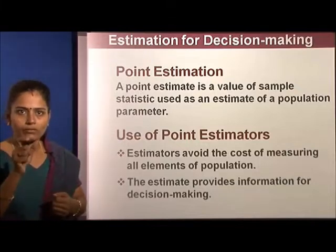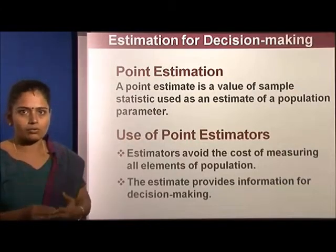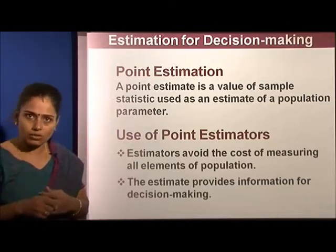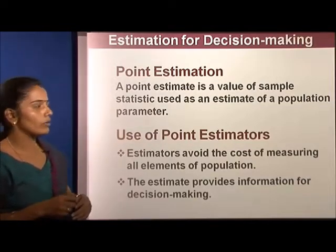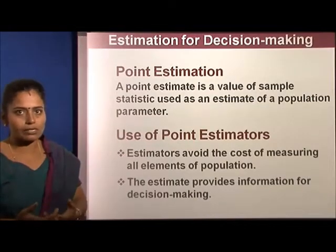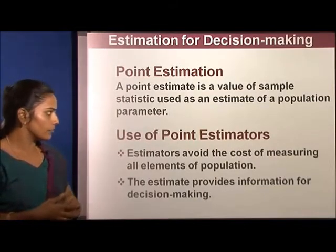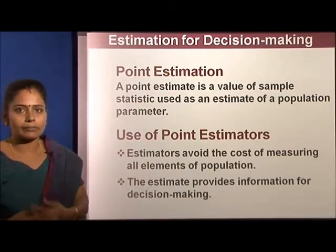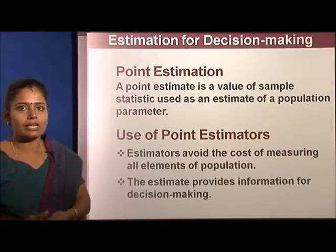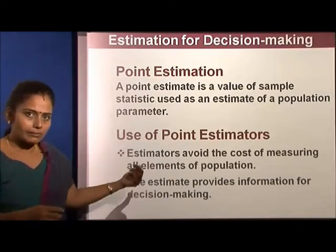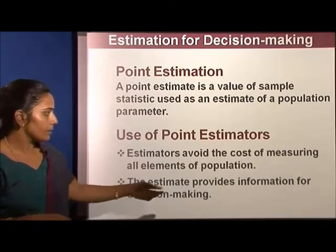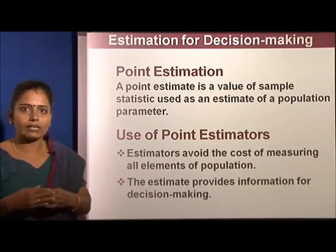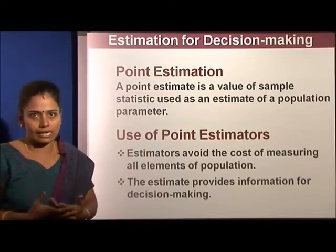Point estimation is where we tell one specific value — for instance, this year my sales are one thousand crores, so next year's sales will be one thousand two hundred crores. That single value is called a point estimate. It is the value of a sample statistic representing the population parameter, and it is mainly used to avoid the cost of measuring all elements of the population. It provides a single useful value for decision making and improving business strategy.